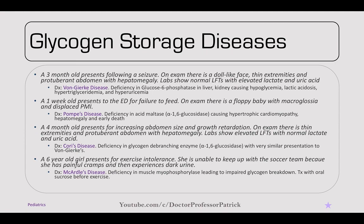A four-month-old presents for increasing abdominal size and growth retardation. On exam, there are thin extremities and a protuberant abdomen with hepatomegaly. Labs show elevated LFTs with normal lactate and uric acid — different from von Gierke's disease. This is Cori's disease, a deficiency in the glycogen debranching enzyme, or alpha-1,6 glucosidase. Similar to von Gierke's, but look for elevated LFTs with normal lactate and uric acid.